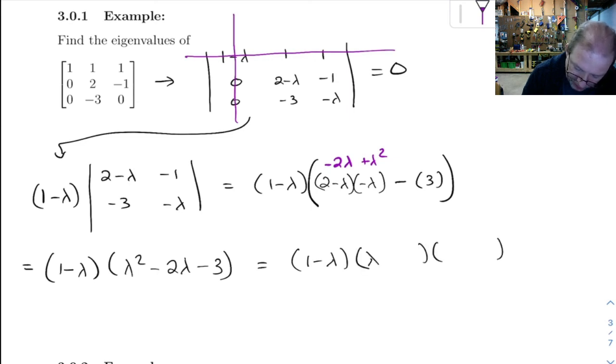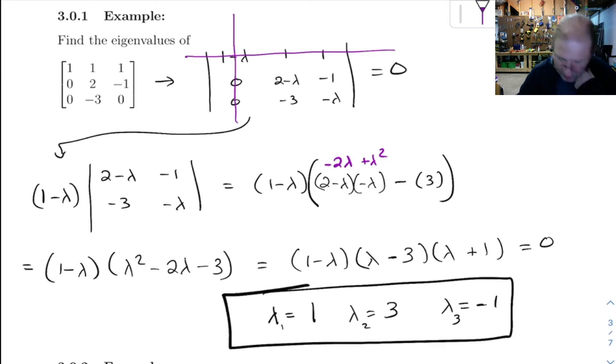So I'll wind up with 1 minus lambda. And then this over here, let's see if it'll factor. If it won't factor, we'll have to use the quadratic formula. But I think it'll factor. If we make the numbers 1 and 3, if we make it minus 3 and plus 1, that will multiply out to give us minus 3 and then minus 2. All right, so our eigenvalues are lambda equals 1, lambda equals 3, and lambda equals negative 1. And I'll just subscript those for my solutions. And that's it.